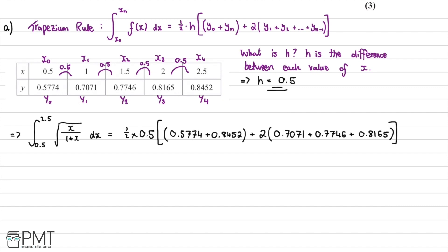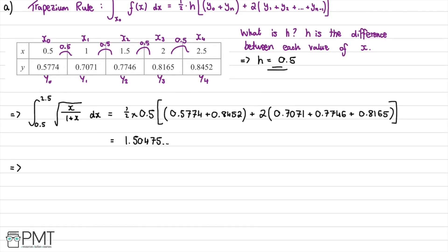Substituting all values carefully into the calculator, this comes out to approximately 1.50475. Since the question asks for three significant figures, our estimate is 1.50. This question was worth three marks: one for identifying h = 0.5, one for correctly substituting values into the formula, and one for the correct final answer.